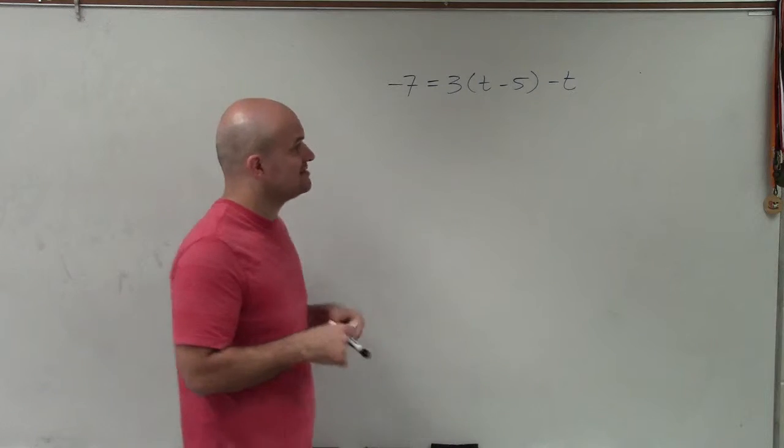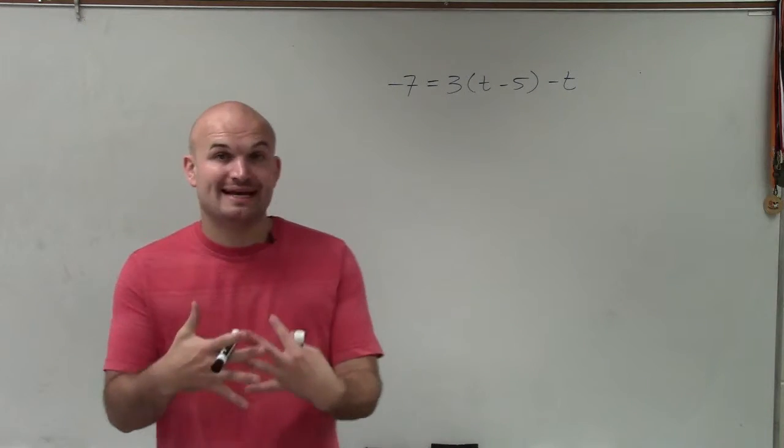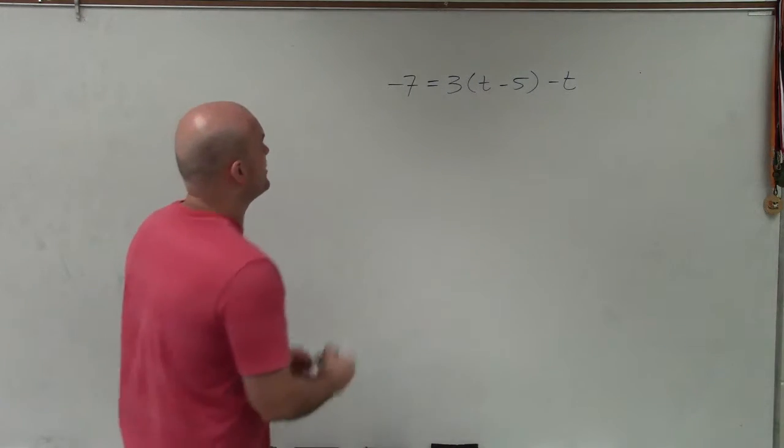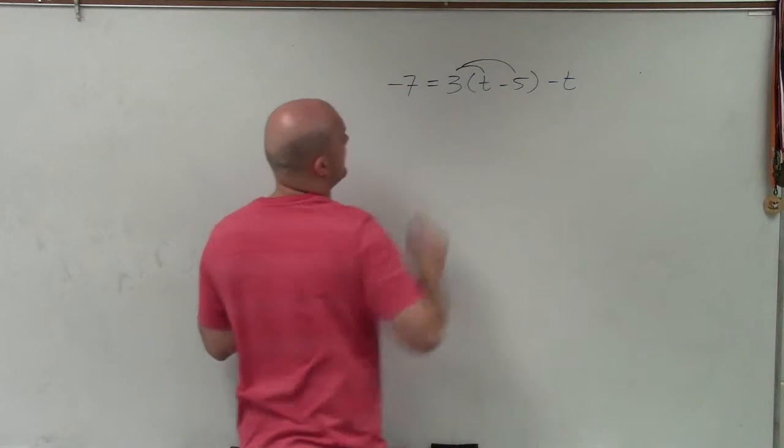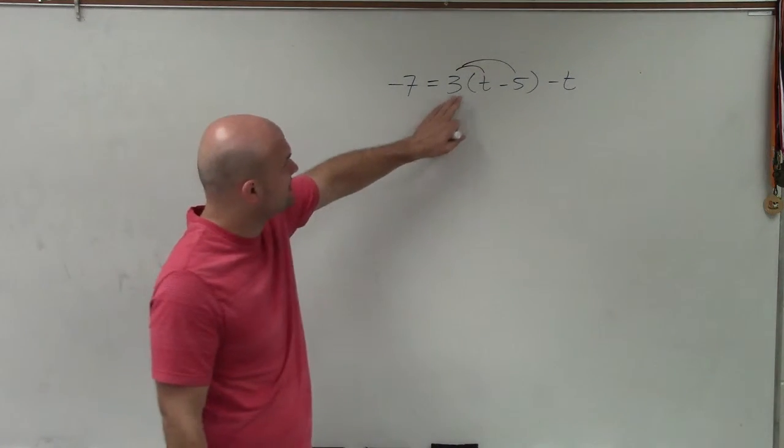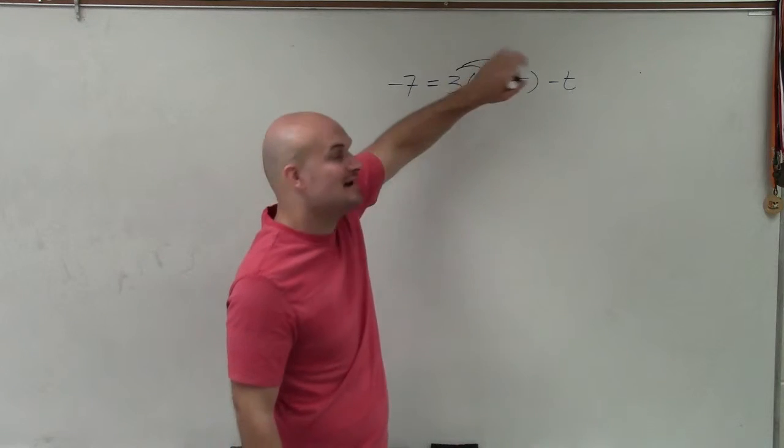When solving for this, whenever I see parentheses, I want to get rid of the parentheses. So to do that, I'm going to have to apply distributive property. What I'm pretty much doing with distributive property is multiplying the 3 times the t, as well as multiplying the 3 times the negative 5.